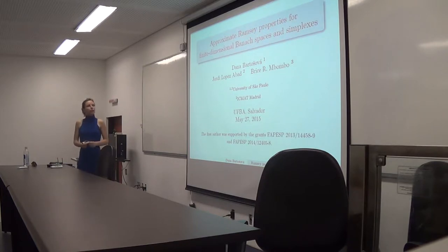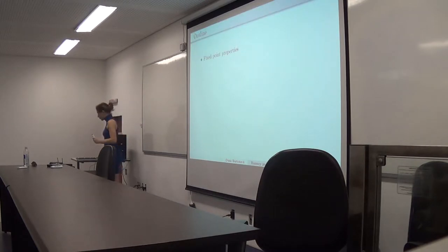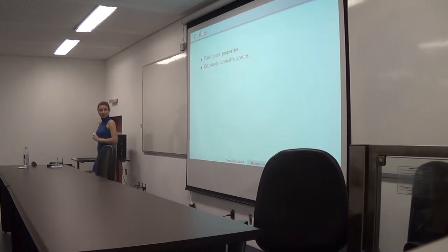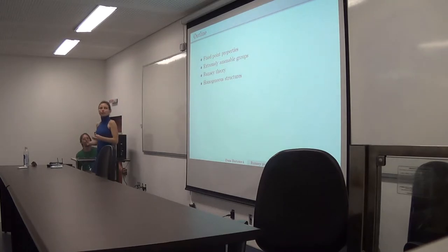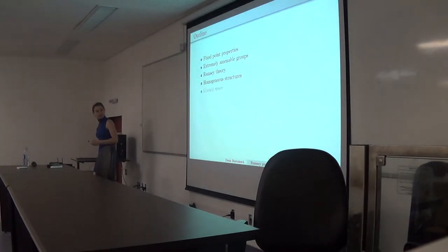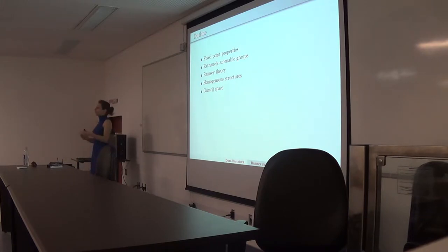I will introduce some motivation for what we are interested in. We are interested in a very strong version of fixed-point properties, and that's the definition of extremely amenable groups. We will make a link with Ramsey theory — a link that was made about 10 years ago, and since then there has been a lot of momentum in this research area. We will see why we can use Ramsey's theory of finite approximations, and look at new examples in new settings that have been introduced.